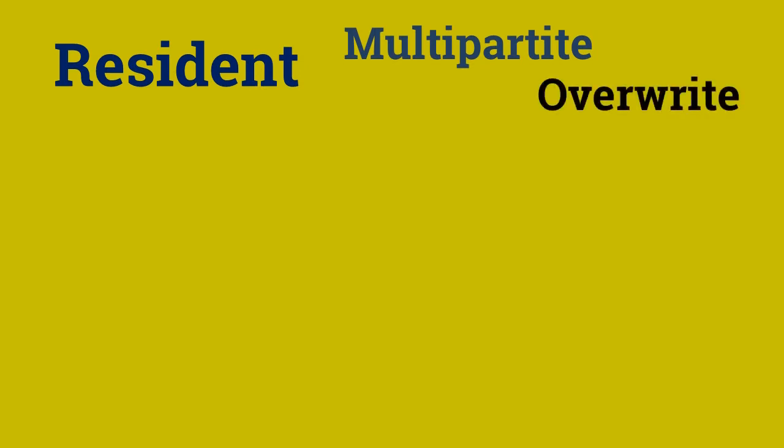There are also overwrite viruses that make the infected file totally or partially useless. There are boot viruses that infect the boot sector and spread mostly through the floppy disk. Then the macro viruses — they mainly spread through macros, which can be made in office documents like in Word or PowerPoint.